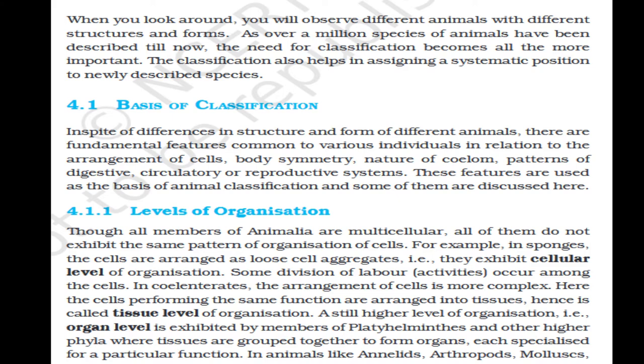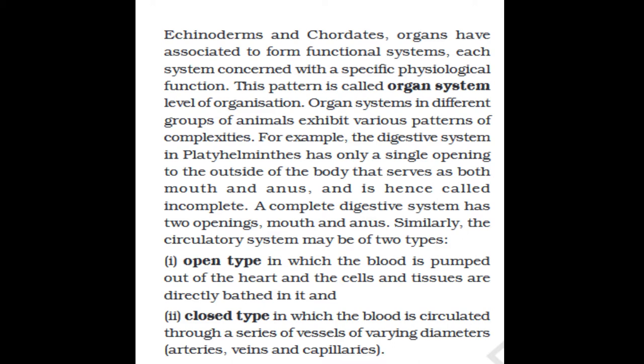In animals like annelids, arthropods, molluscs, echinoderms, and chordates, organs have associated to form functional systems, each concerned with a specific physiological function. This pattern is called organ system level of organization. Organ systems in different groups exhibit various patterns of complexity. For example, the digestive system in Platyhelminthes has only a single opening serving as both mouth and anus — called an incomplete digestive system. The complete digestive system has two openings: mouth and anus. Similarly, the circulatory system may be open type, in which blood is pumped out of the heart and cells are directly bathed in it, or closed type, in which blood circulates through vessels of varying diameters — arteries, veins, and capillaries.